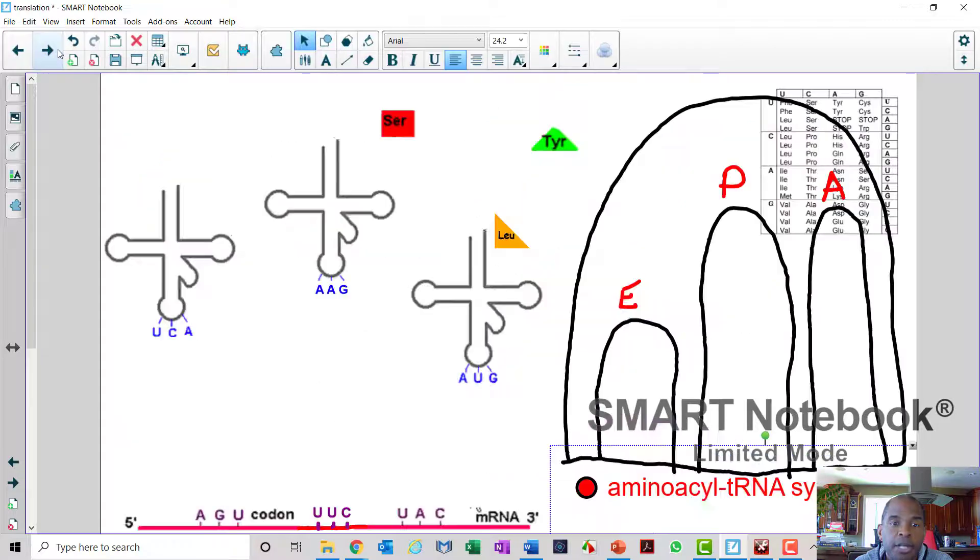Now, the process of translation proceeds through several stages. Those key stages include the charging of the tRNA, the initiation, elongation, termination, processing, done. So it's very similar to replication and transcription in its thought and process. So let's start from the beginning. Let's start with the charging of the tRNA.